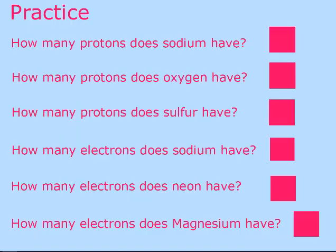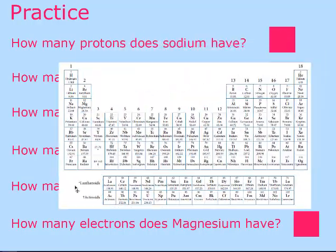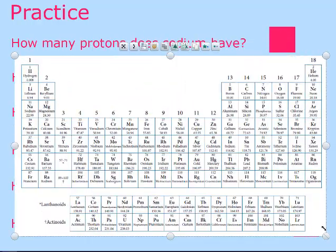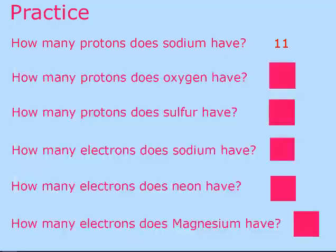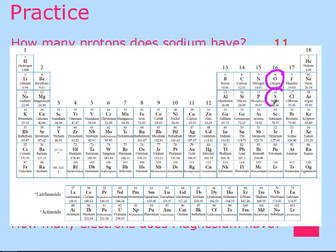For example, if a question asks how many protons sodium has, you find sodium on the periodic table, look at the top number — it's 11, so sodium has 11 protons. For oxygen and sulfur: oxygen has 8 protons and sulfur has 16 protons.